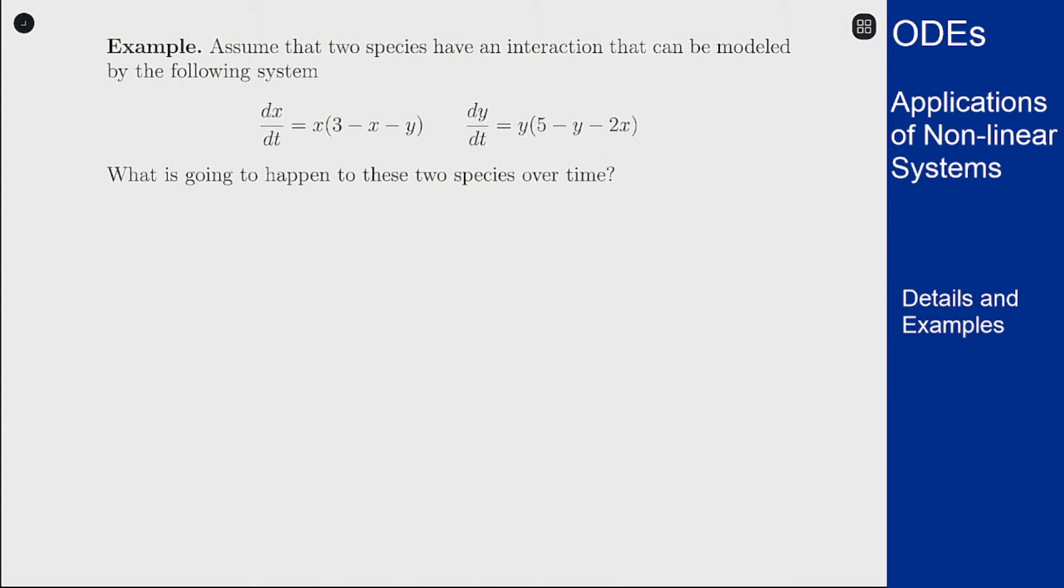First expand out these equations. If I expand this out I can rewrite the equations as dx/dt is x times 3 minus x and then minus xy, and dy/dt is y times 5 minus y and then minus 2xy.